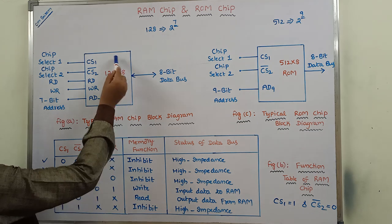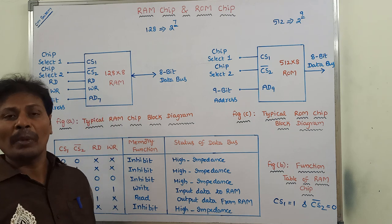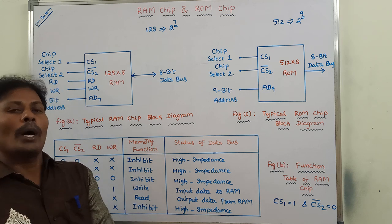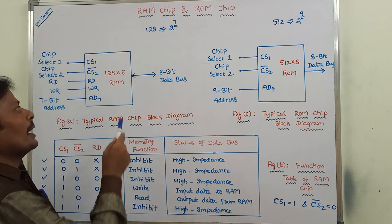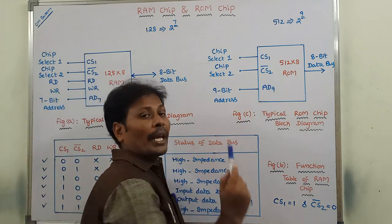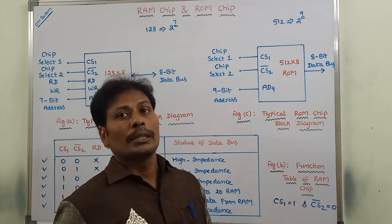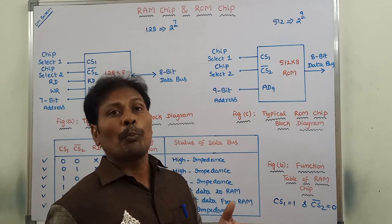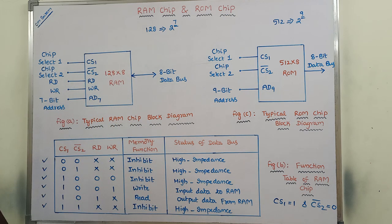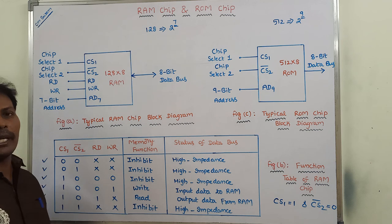RAM is a volatile memory — whatever data is stored in RAM is available only when the power is on; once the power is turned off, the data is erased. ROM is non-volatile, meaning whatever data is present in the ROM is stored permanently whether the power is on or off. This concludes the description of the RAM chip, its function table, and the ROM chip.